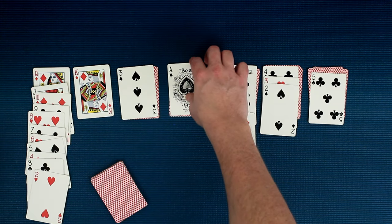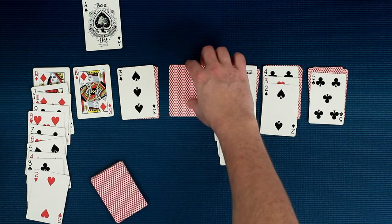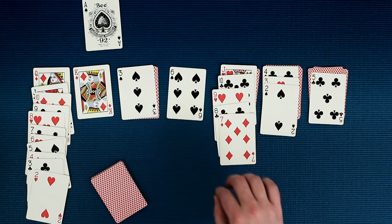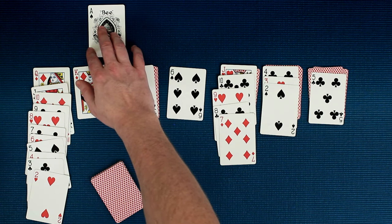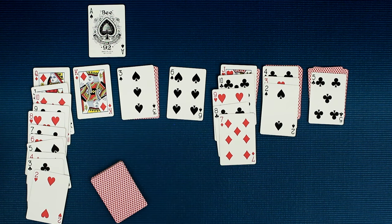Now whenever you get an ace, you get to make a new pile up top. These new piles are called the foundation piles. You can have up to four of them, one for each ace. Now you can move cards up into these foundation piles, but up here they have to be the same suit. And they go up from ace to king.